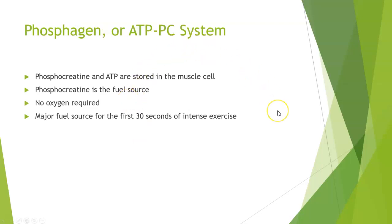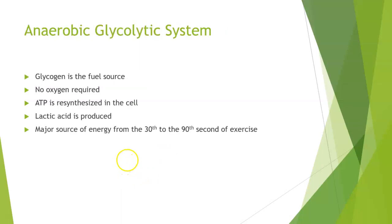Regarding the energy systems: we have the phosphagen or ATP-PC system, utilizing phosphocreatine and ATP stored in the muscle cells. This phosphocreatine is the fuel source when we don't have oxygen. When we start exercising aerobically, the first 30 seconds of exercise the muscles are actually using phosphagen before they start to utilize ATP. We go from the phosphagen system to the anaerobic ATP system and then we enter into the aerobic system, which you talked about with the Krebs cycle. ATP is required to do these things.